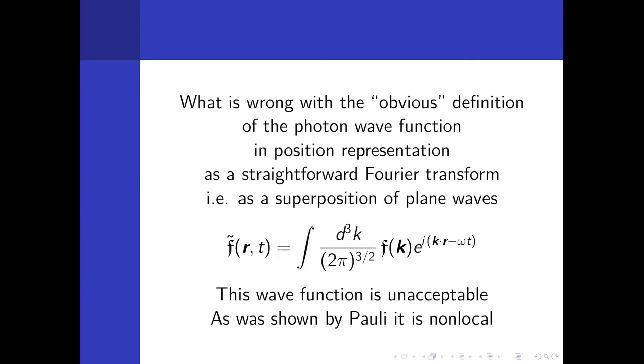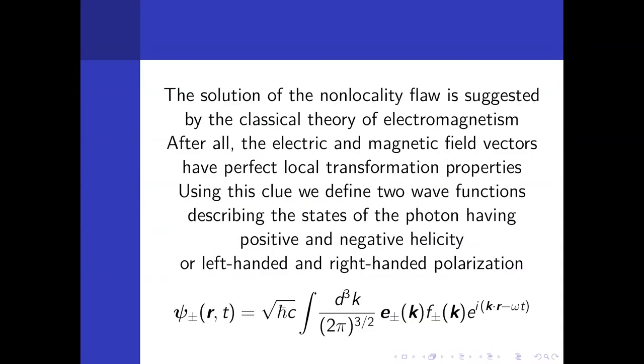But non-relativistic quantum mechanics does not work for photons, obviously, because they are as relativistic as they could be. So now we have the problem: how to connect the Hilbert space in momentum space with the scalar product defined by Wigner, and the wave functions in position space? The first idea is just to take the Fourier transform. So I take f of k for Wigner and I Fourier transform it. This is wrong. This would work in non-relativistic physics, but it was already shown by Pauli many years ago that this object with the tilde here is non-local.